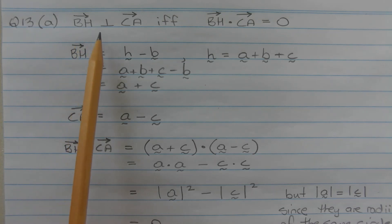Vector BH is perpendicular to vector CA if and only if the dot product of the two vectors equals zero.